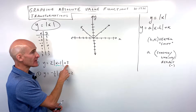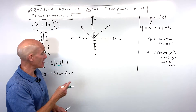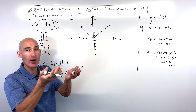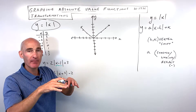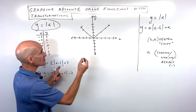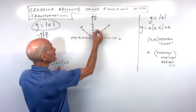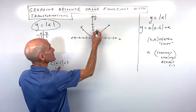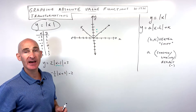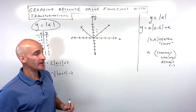The k value — the one outside the absolute value — has the same effect as its sign. Positive three means we go up three; minus three would mean down three. So for this example, it's right one, up three, and that's going to be our vertex — that's where the graph has its change in direction.